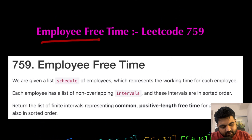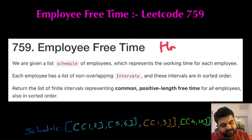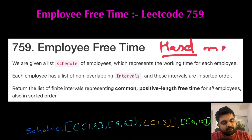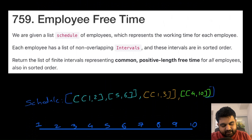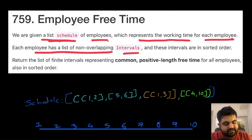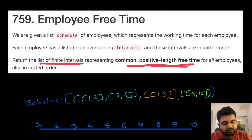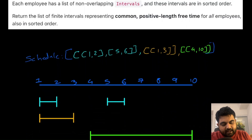The LeetCode problem we are going to solve is called Employee Free Time. This is a LeetCode premium problem, and that's why the interface looks different. It is defined as a hard problem, but in my opinion it should have been a medium. Basically, we are given a list of schedules of employees representing working time for each employee. Each employee has a list of non-overlapping intervals in sorted order, and we need to return the list of finite intervals representing common positive-length free time amongst every single employee, in sorted order.